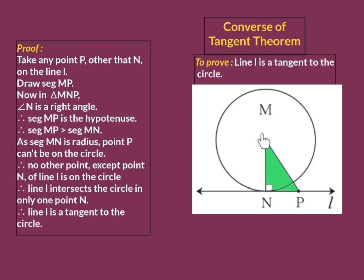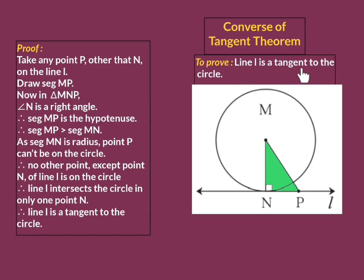Since MP is greater than MN, MP is greater than the radius. That means point P does not lie on the circle. So no other point except point N of line L is on the circle. Hence line L intersects the circle in one and only one point — that is point N — meaning there is one and only one common point between the circle and the line. That is the definition of tangent. Hence line L is tangent to the circle.